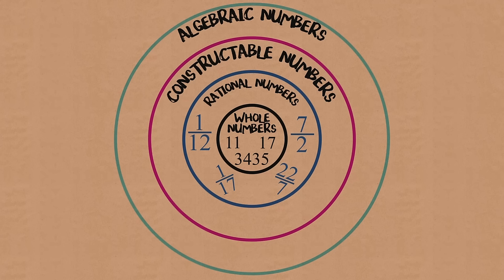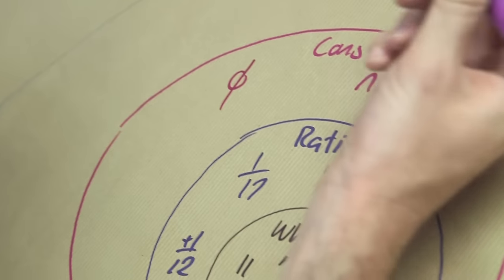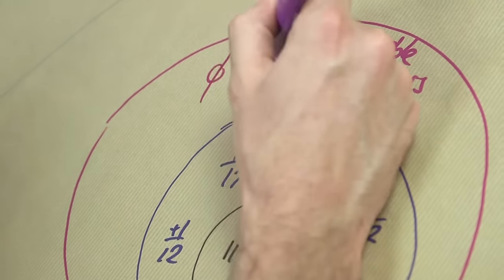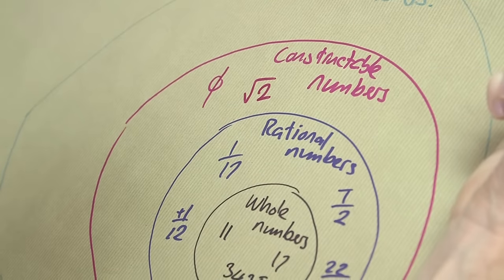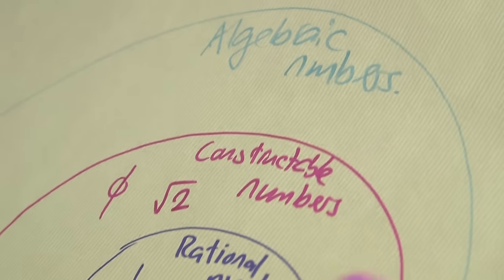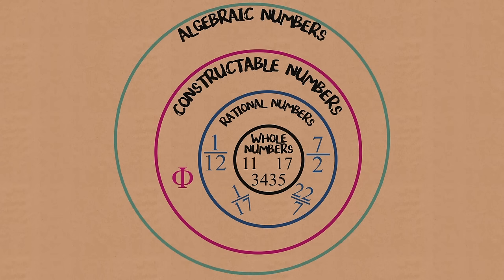And so constructible numbers are things that you can construct with a pencil and a compass and a ruler. So phi, you can do that, the golden ratio, because you can do root 5, so you can get phi. You can do root 2, that lives in here, that's kind of fun. Algebraic numbers are the solution to an algebraic equation. If it's a square root or lower, you can put it in constructible, you can draw it. If it's higher than that, you can't. So the cube root of 2 is an algebraic number.